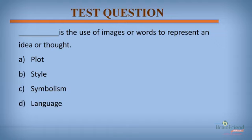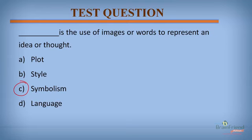Question 2: Blank is the use of images or words to represent an idea or thought. A. Plot. B. Style. C. Symbolism. D. Language. The correct answer is C — Symbolism. Symbolism is the use of images or words to represent an idea or thought.